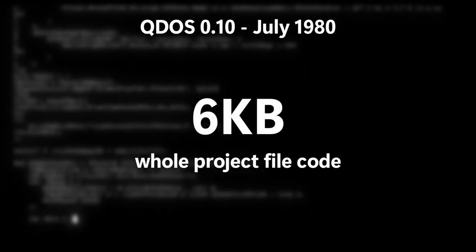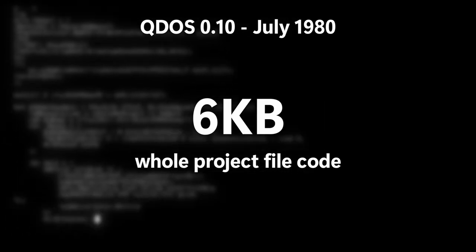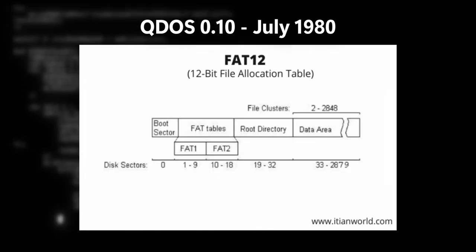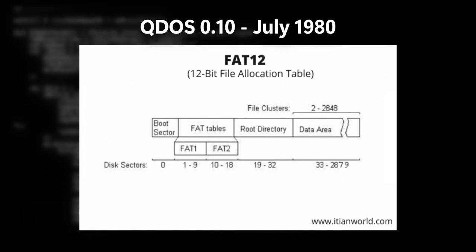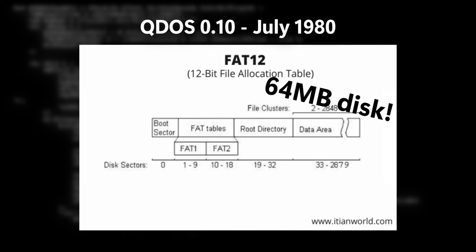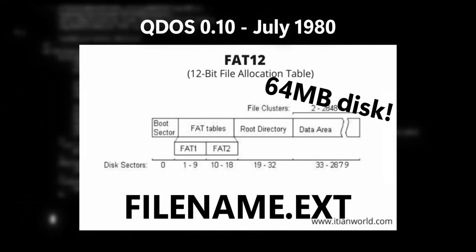In July, Tim decided to quickly release the operating system since it's a more comprehensible choice than constantly adding features while the OS isn't released yet, resulting in QDOS 0.10, built in July 1980. This is the first beta build of QDOS in a half-complete state, and only 10 people had seen this build. It was a preliminary release with commands cramped into a 6KB project. It used a modified version of the Basic86 FAT file system with 12-bit table elements supporting 64-megabyte disks with an 8.3 file naming system, which was adopted from CP/M.